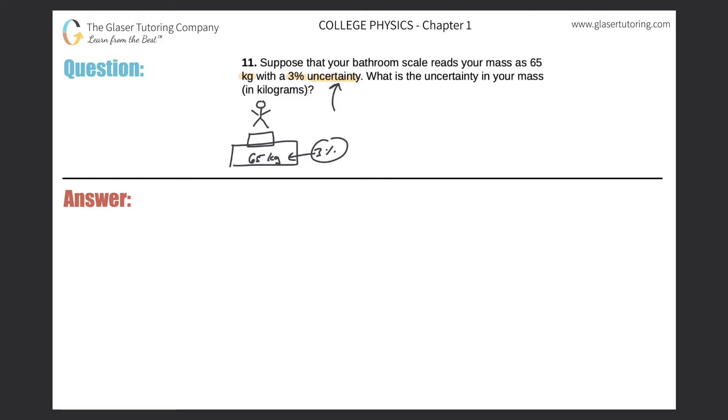So when we're unsure, maybe the mass, maybe the true mass is 65 kilograms. Or maybe it's not. Maybe it's 64 kilograms, or maybe it's 66 kilograms. It could be a little lower, or it could be a little higher. So this term uncertainty, I always want you to remember it as a plus or minus value.